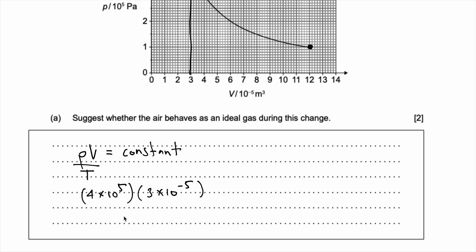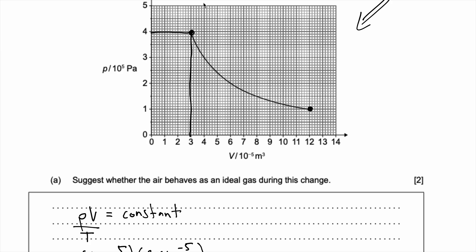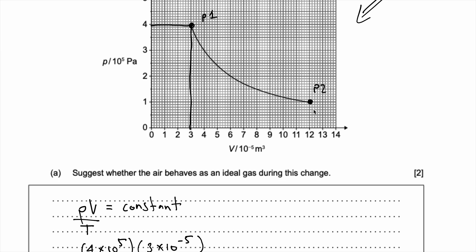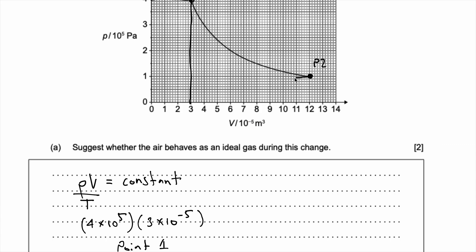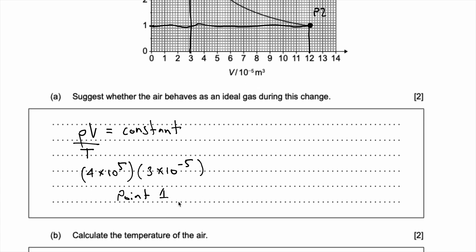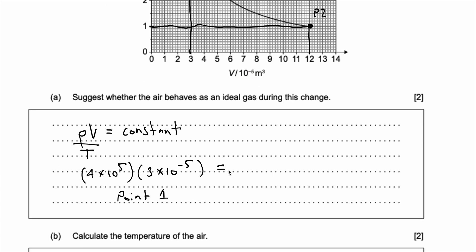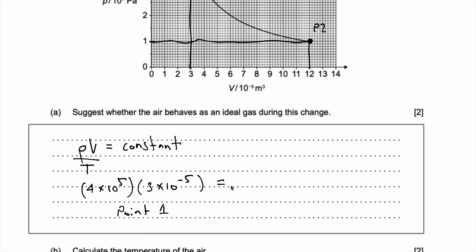Okay, that's at point 1, we can call this P1, that's P2, so what's at point 2? Let's figure it out, so the pressure is 1, and the volume is that. Okay, so the pressure at the second point is 1 into 10 to the power of 5, times by, the volume is 12 into 10 to the power of negative 5.